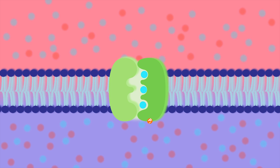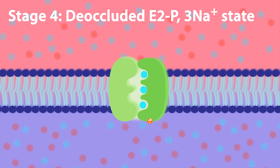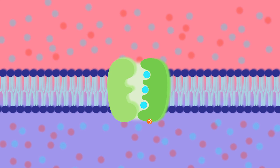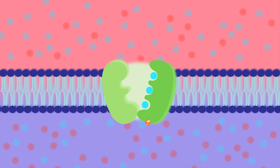Stage four is referred to as the deoccluded E2P-3 sodium state. In this stage, the sodium-potassium ATPase undergoes another conformational change and shifts from the E1 to the E2 conformation, which means the sodium and potassium binding sites are now facing the extracellular side.